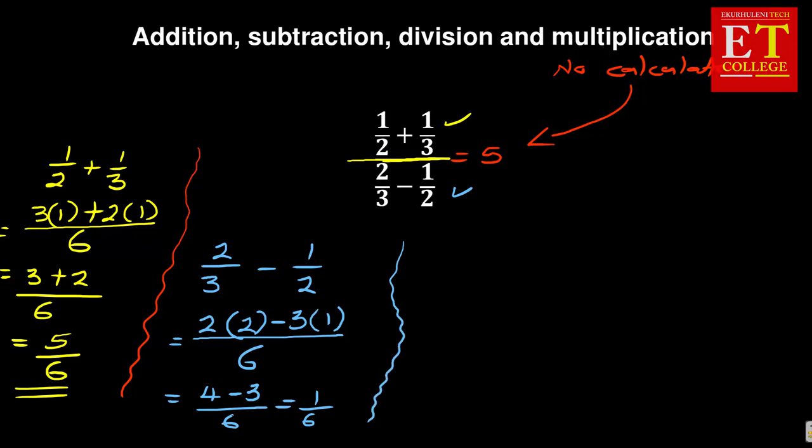Now we have got our two parts. To finalize it or to finish it up, what you are having is five over six, the one that we got here, all over one over six, the one that we got there. This is equal to five over six, you introduce the concept of division because that is a division sign. So divided by one over six.